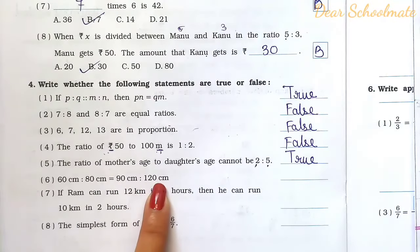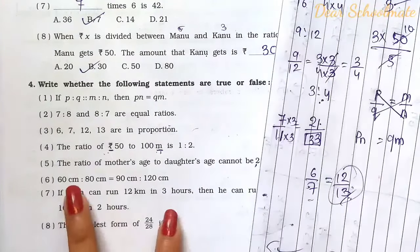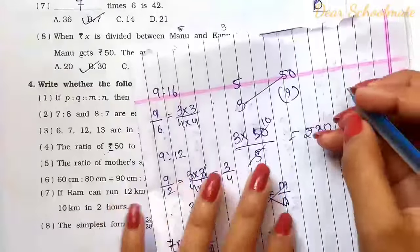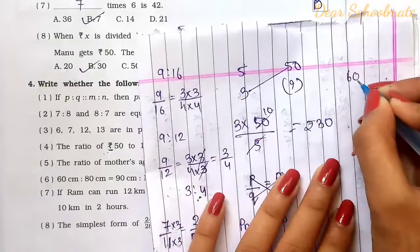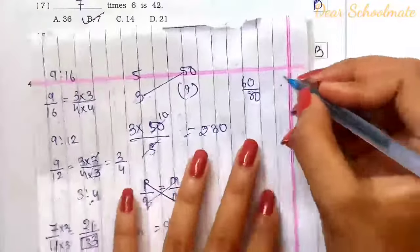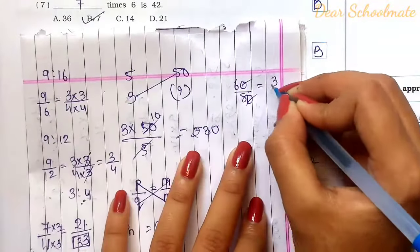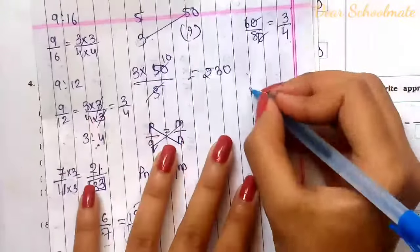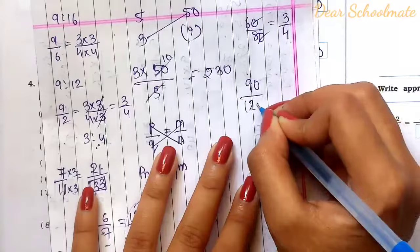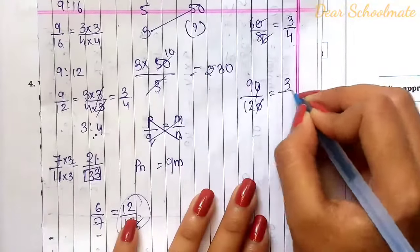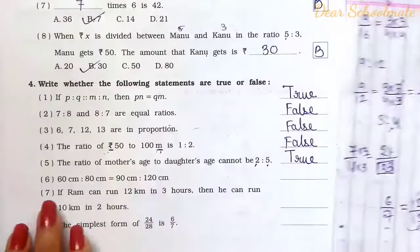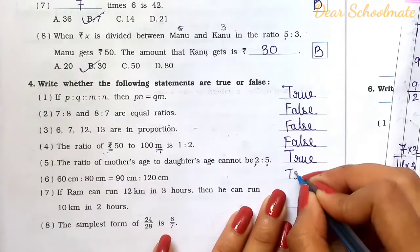Number 6: 60 cm is to 80 cm and 90 cm is to 120 cm are equal ratios. Simplifying 60 by 80: cancel zeros, then 3 twos are 6 and 4 twos are 8, giving 3 by 4. Simplifying 90 by 120: cancel zeros, then 3 threes are 9 and 4 threes are 12, giving 3 by 4. Both equal 3 by 4, so the statement is true.